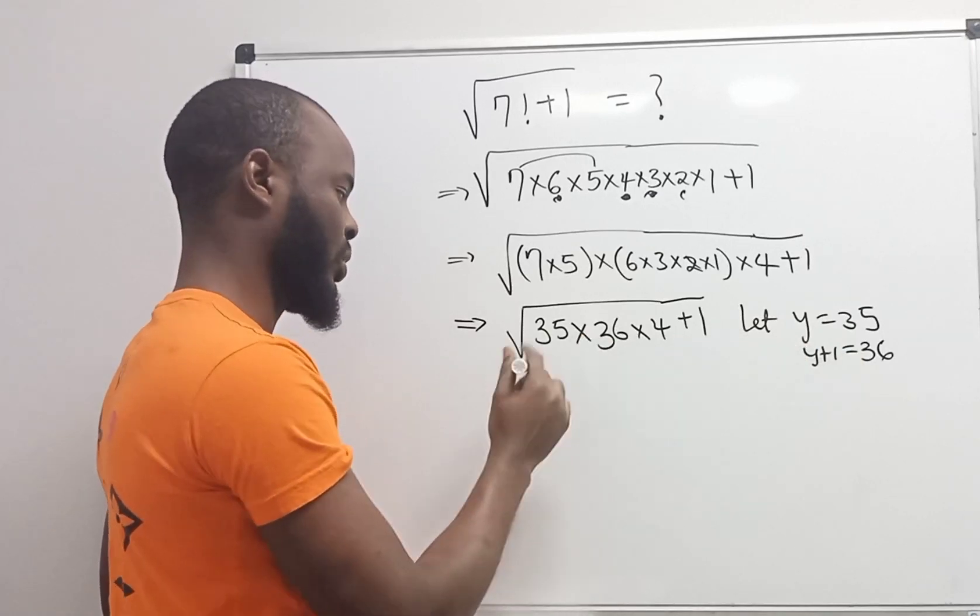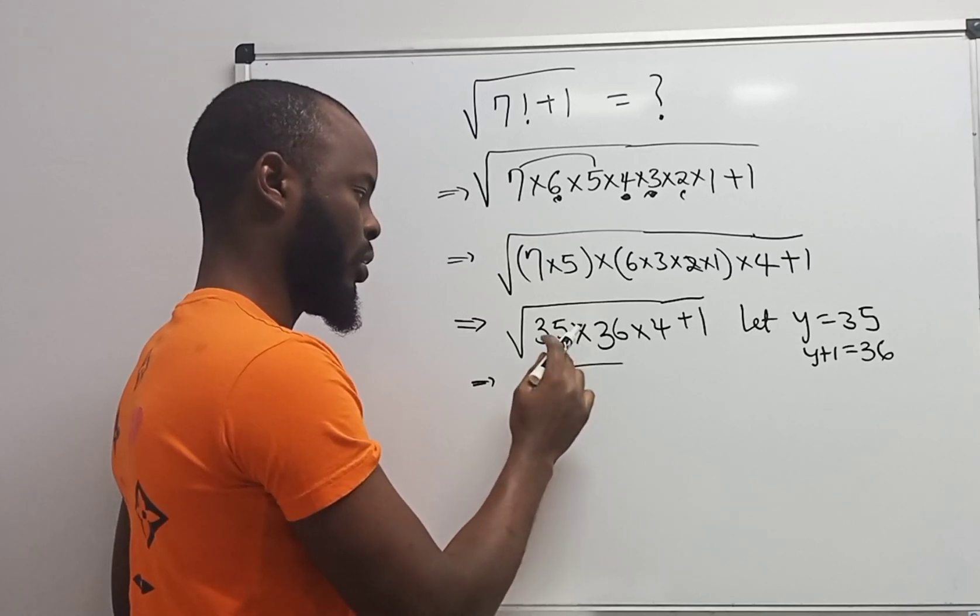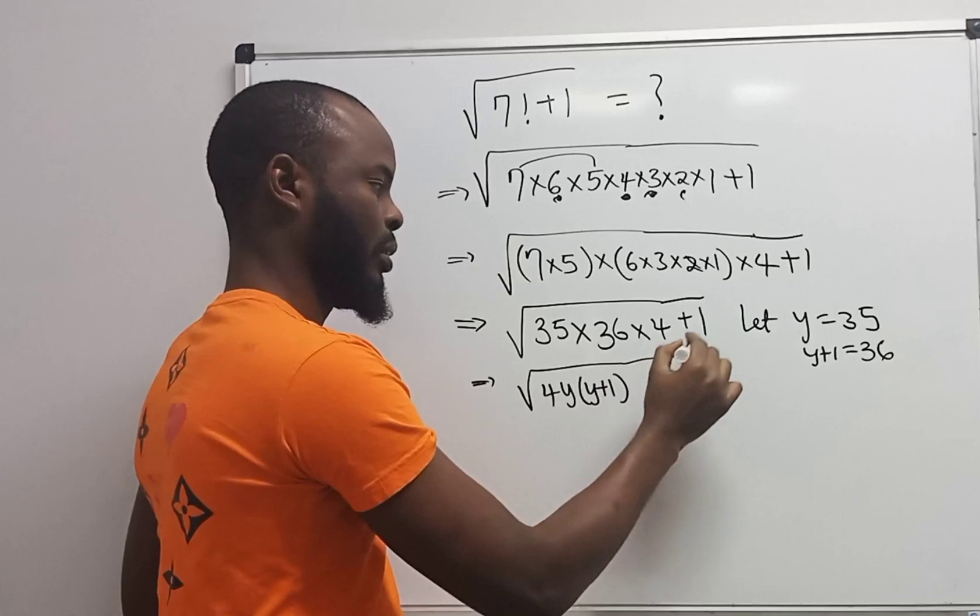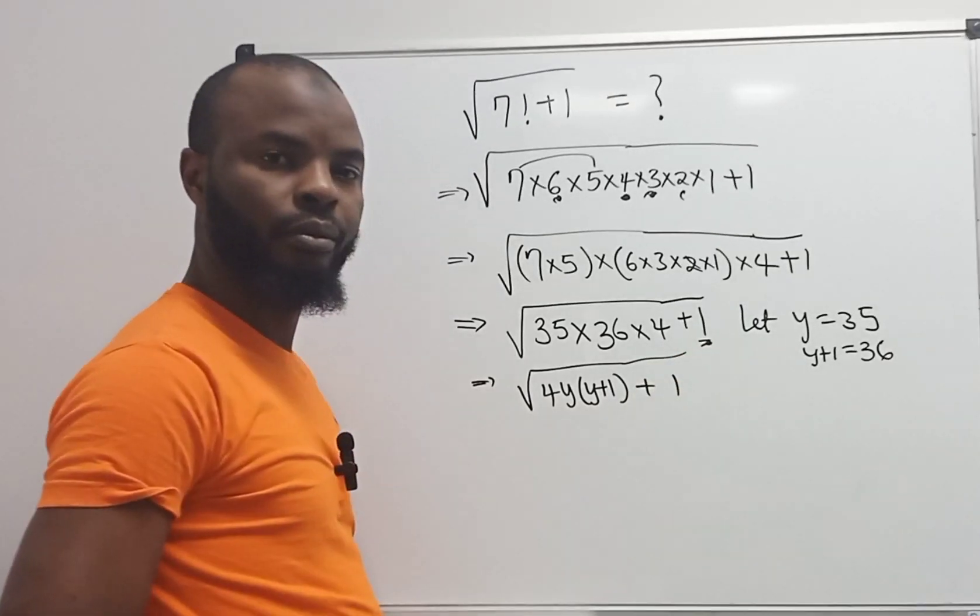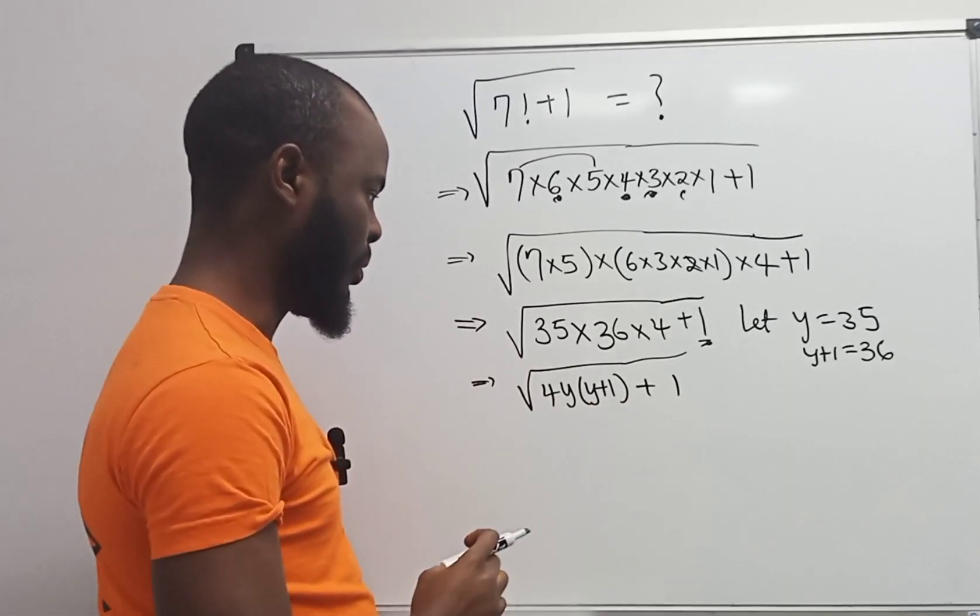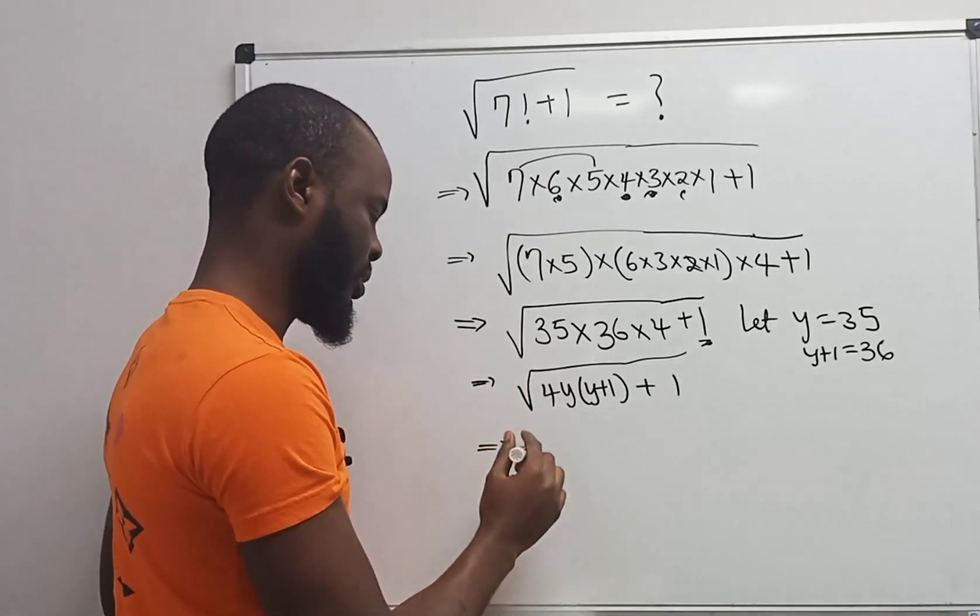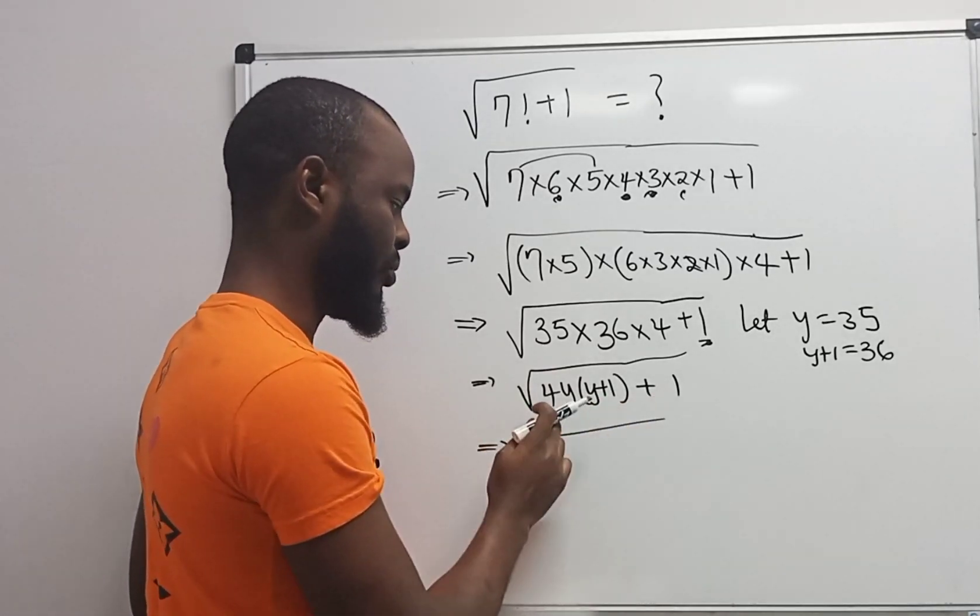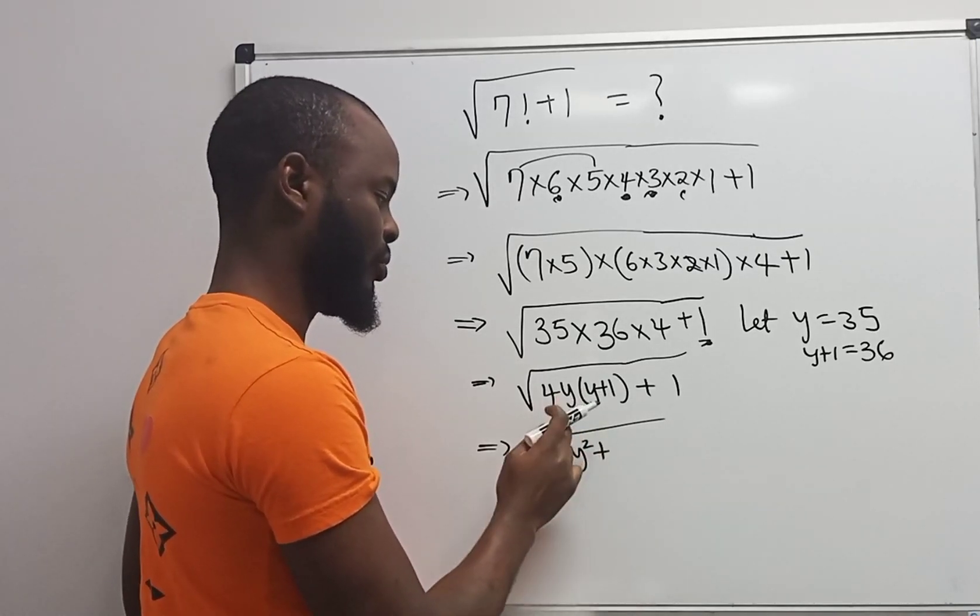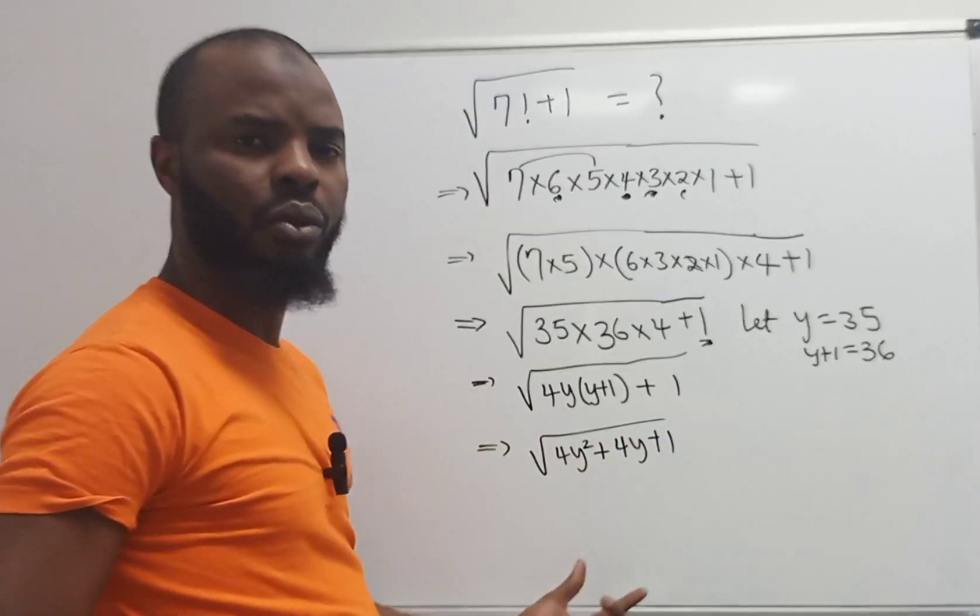Now plugging in this variable, I'm going to have 4y times y plus 1 is 36. Let's just bring out this bracket. 4y times y gives 4y squared. 4y times 1 gives 4y plus 1.